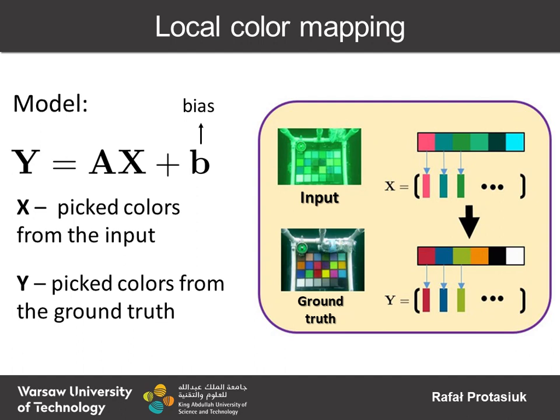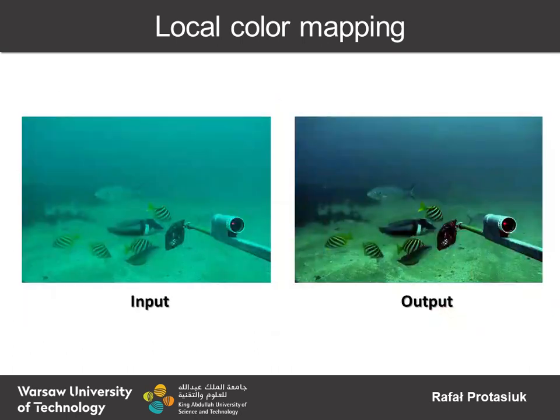It can be presented as y equals ax plus b, where given input pixel values x are mapped to the output y through the affine parameters a and b that need to be learned. Such simple linear approaches in underwater color correction are not satisfactory, as they can only modify a few existing colors and not generate new ones, which could introduce a more natural look.